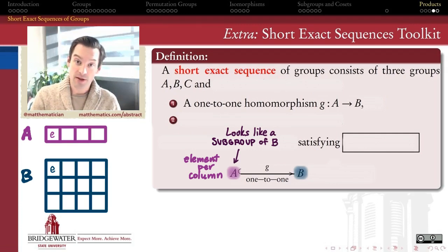But satisfying the homomorphism property at least makes sure that the algebraic structure, the algebraic operation, is being respected. So we're going to kind of think of A here as having one element for each column of this Lagrange theorem-like table for the group B.